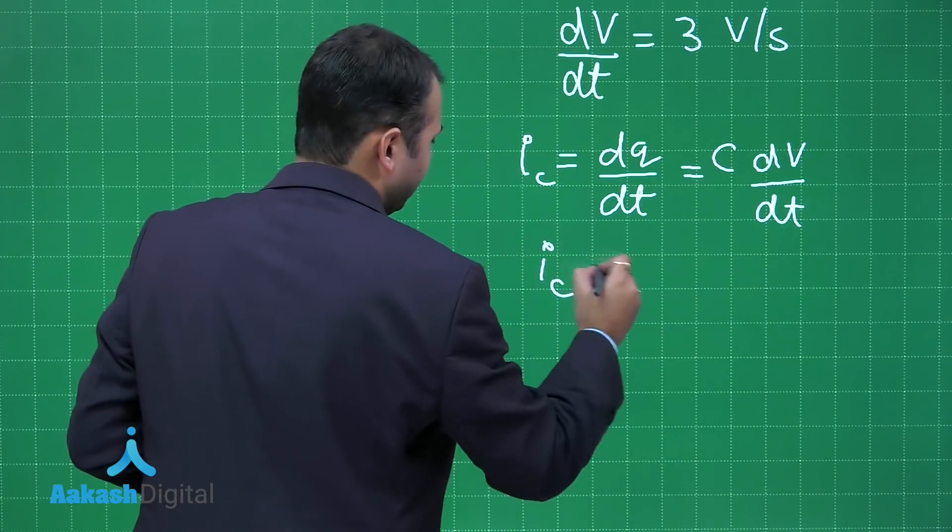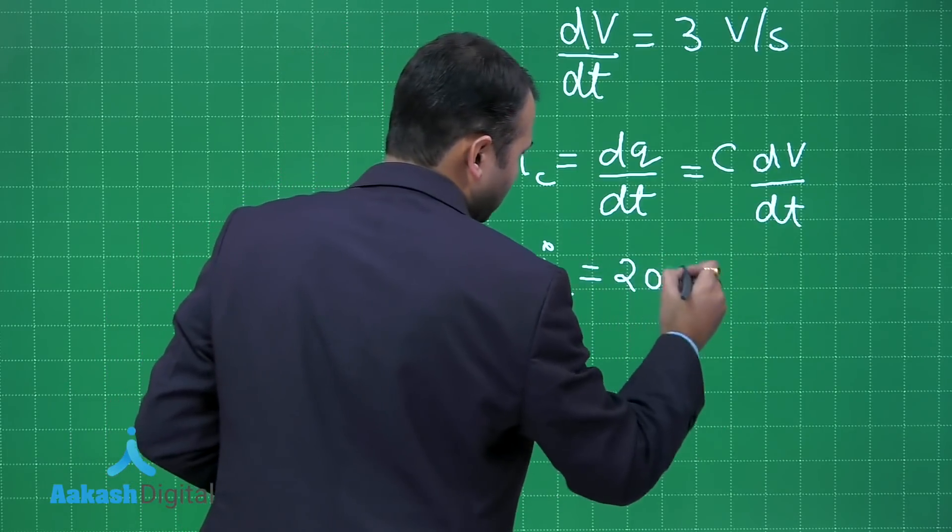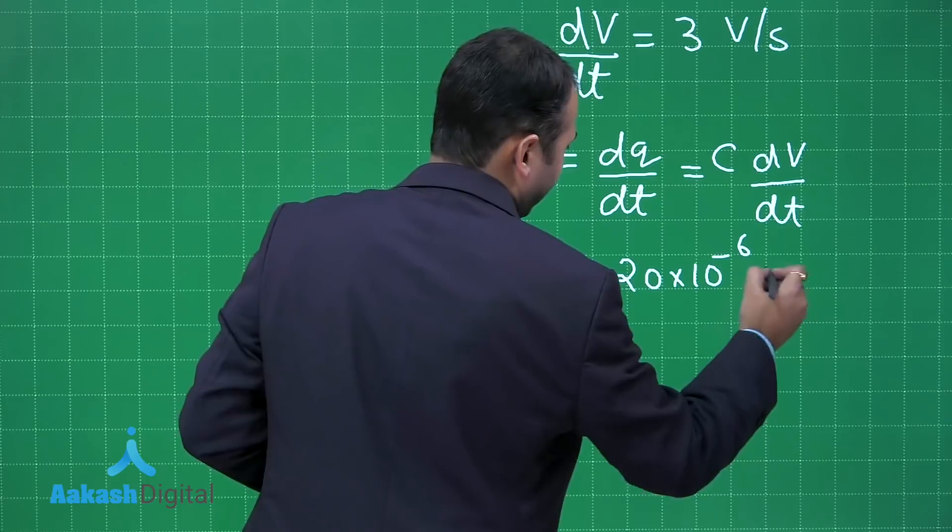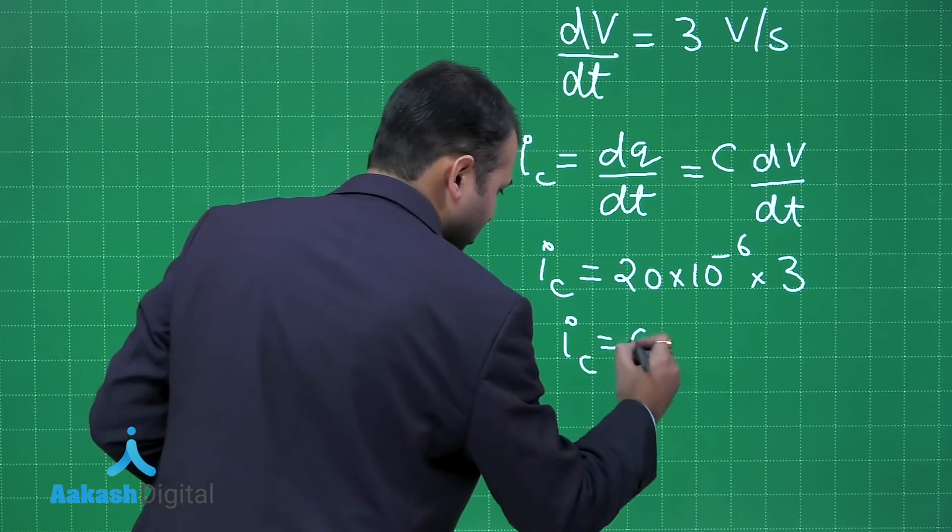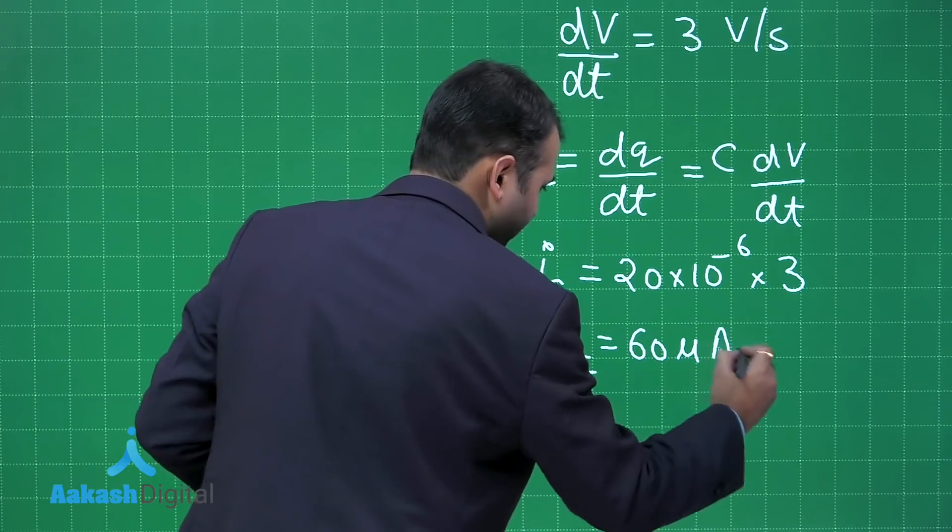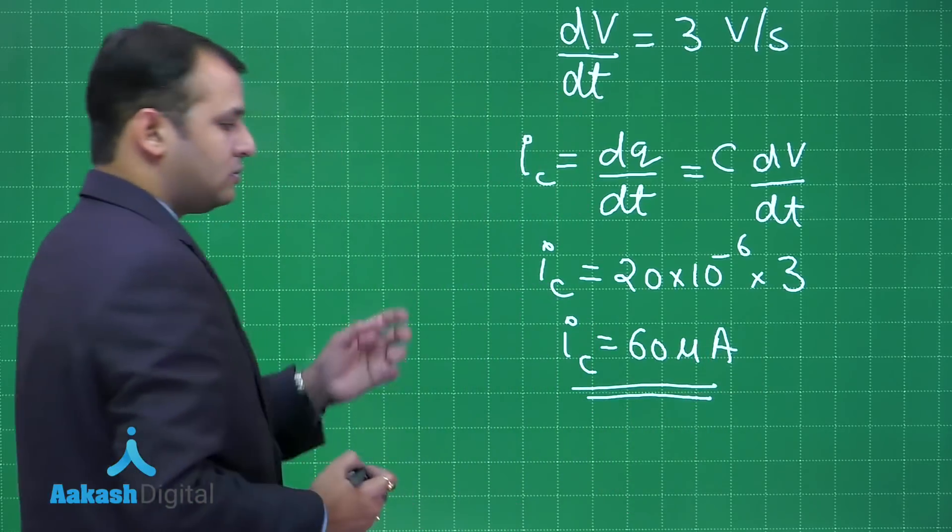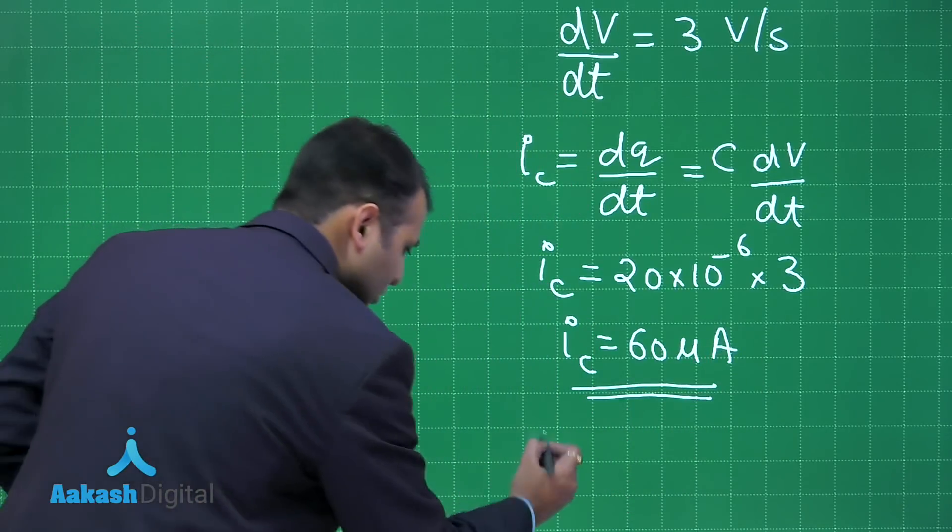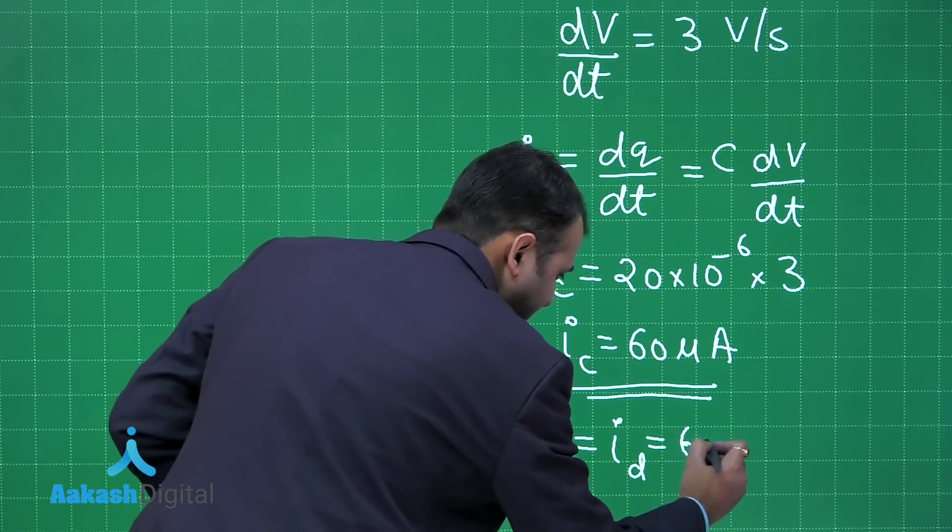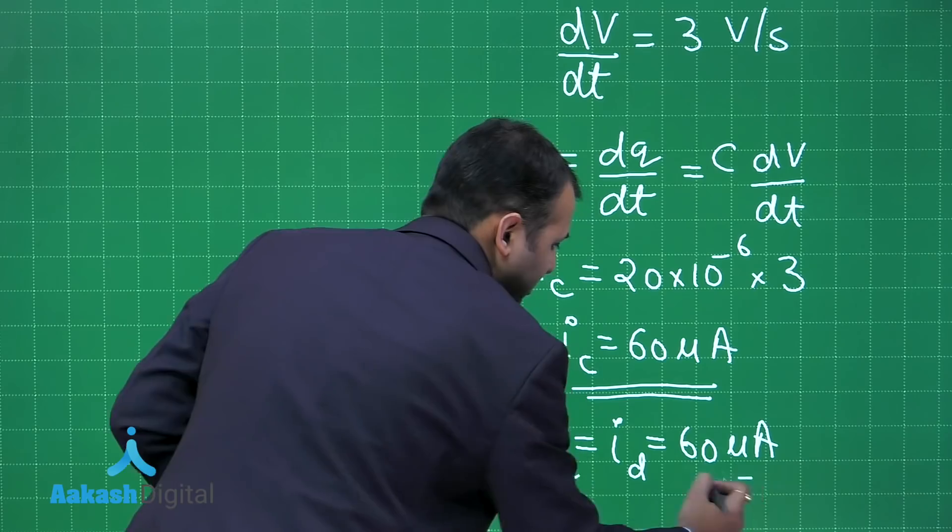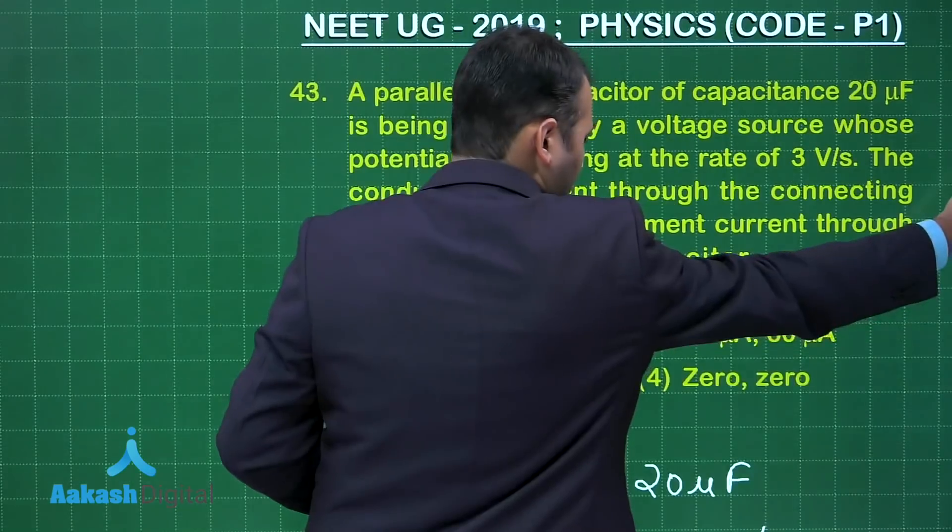So IC will become 20 into 10 to power minus 6 and DV by DT is given as 3. So IC equals 60 microamperes. And in here between the plates of capacitor you are also aware that IC would be equal to a displacement current that would be 60 microamperes. So let's see which is the best suited option.